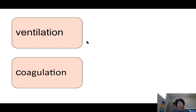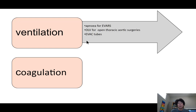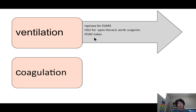For ventilation, what do we need to think about? For endo cases, we need to be able to guarantee apnea while they're doing their imaging — ventilation will blur the image. So whatever anesthetic technique you employ, you have to be sure that you can have apnea on request. For our open thoracic aortic surgeries, we often have to provide one-lung ventilation with the left lung down. This is suitable for the double-lumen tube as well as for bronchial blockers, which is my personal choice. Consider the use of ETAC tubes in urgent cases or in patients where ICU admission is a strong possibility.